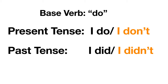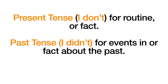In the past simple tense: 'I did,' 'I didn't.' Remember 'I didn't' is a contraction of 'I did not,' and 'I don't' is a contraction of 'I do not.' So we use the present tense 'I don't' for routine or fact, and we use the past tense 'I didn't' for events in or a fact about the past.